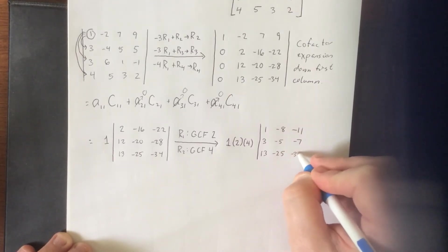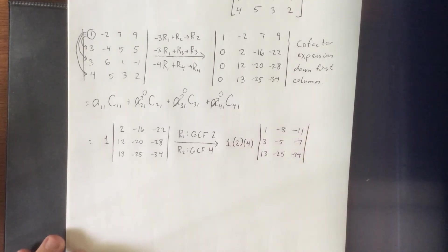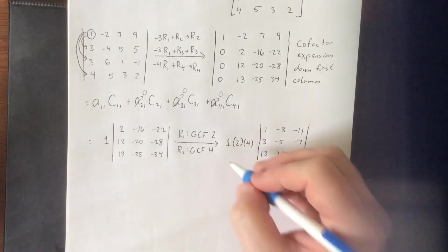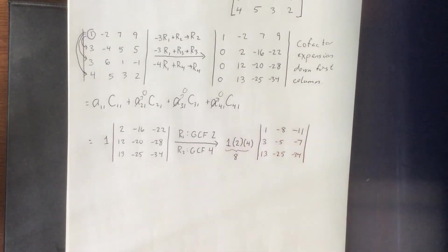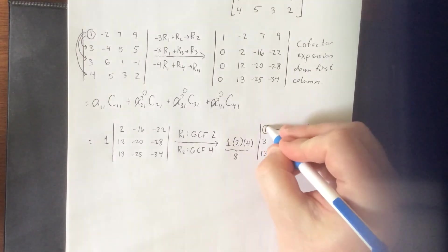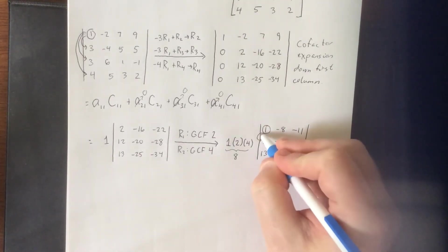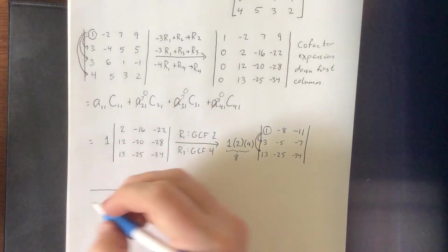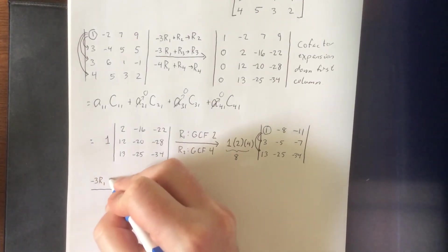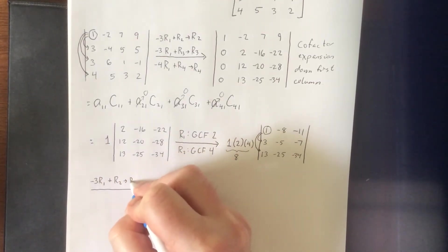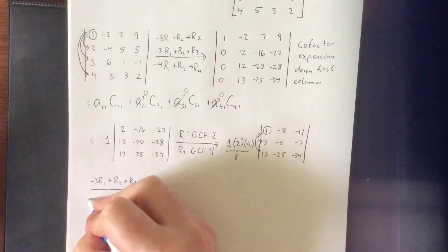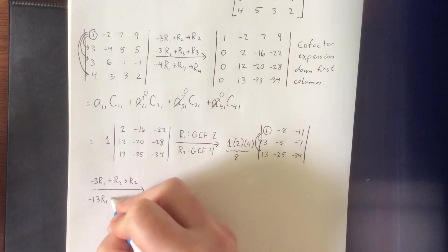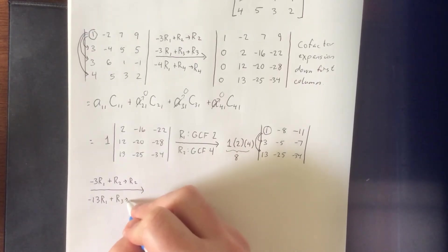We can combine the factored values of 2 and 4 into a coefficient of 8. Now, with a 1 again in the 1,1 entry, I'll use it to zero out the two entries below it. The operations: -3 times row 1 added to row 2 (new row 2), and -13 times row 1 added to row 3 (new row 3) — we'll probably regret that second one.